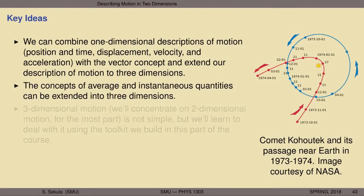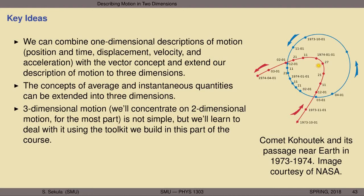We will see that three-dimensional motion — and for the purposes of this section of the course, we will primarily concentrate on two-dimensional motion — is not simple, but we will learn how to deal with it using the toolkit built in this part of the course. Some very beautiful examples of motion in at least two dimensions are illustrated in the graphic on the right, which was produced by NASA to show the passage of the comet Kohoutek near Earth in the period between 1973 and 1974.